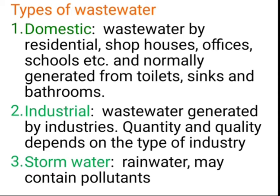Industrial wastewater is generated mainly by industries, and the quantity and quality of the water depends upon the type of industry — textile industry, chemical industry, pharmaceutical industry, and many others. Depending on the industry, the wastewater will vary. The third type is storm water, in which rainwater may also contain pollutants such as those from acid rain.